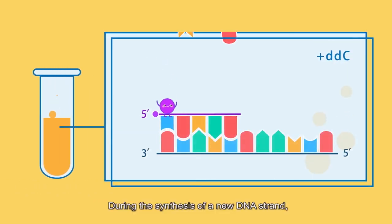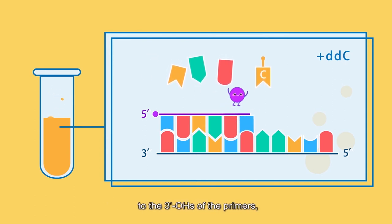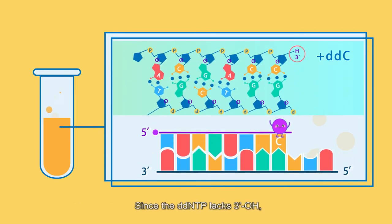During the synthesis of a new DNA strand, the prime end of the DNTPs will be added to the three prime OHs of the primers, forming phosphodiester bonds. This addition carries out until a DDNTP is encountered. Since the DDNTP lacks three prime OH, it cannot continue to bond with the next nucleotides, and the elongation of the DNA cannot proceed.